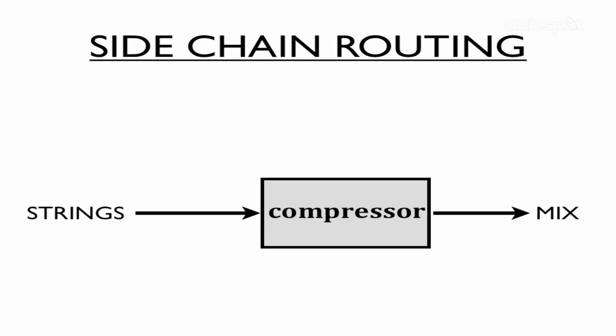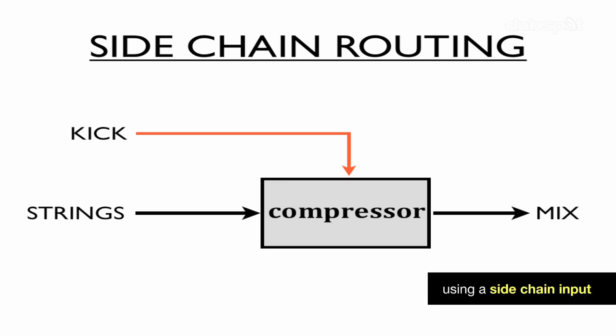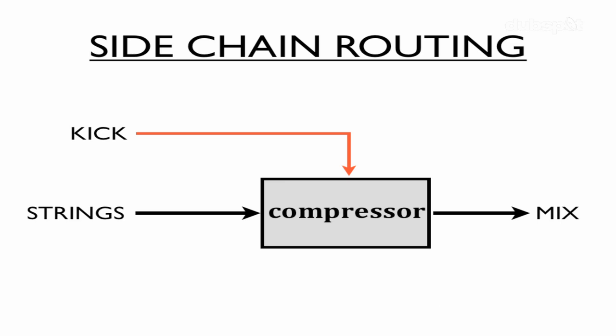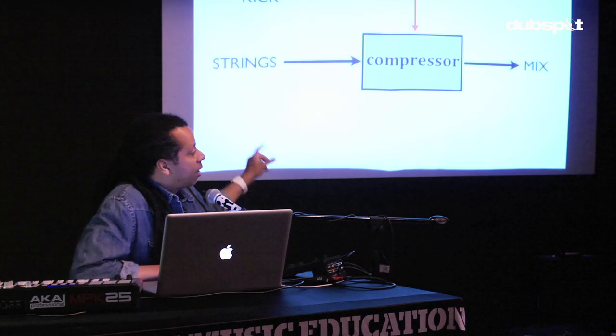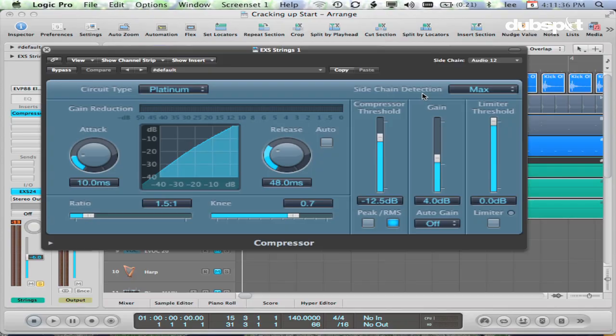Any effect that we put on our track — right now it's the compressor — the compressor is looking at the audio coming into it and is going to do whatever compression it needs to do based on that audio. Now here's where it gets fun when we add a side-chain input. I'm going to use the kick track as my side-chain input. The compressor will still compress the strings, but not based on what the string audio tells it to do — based on what the kick is telling it to do.